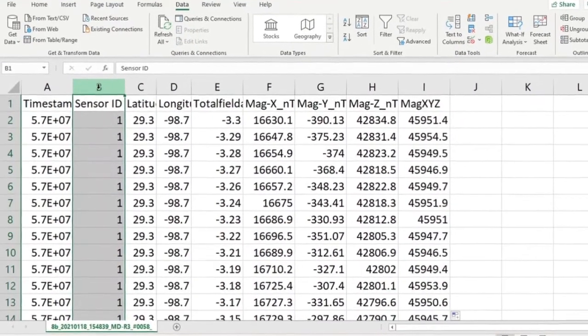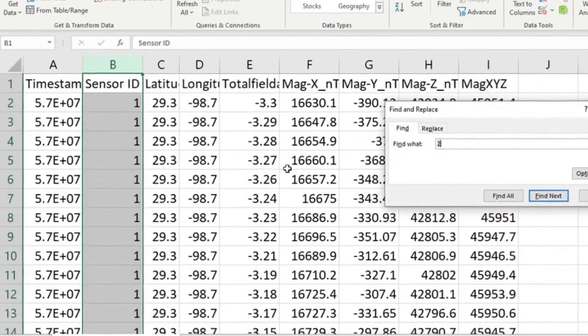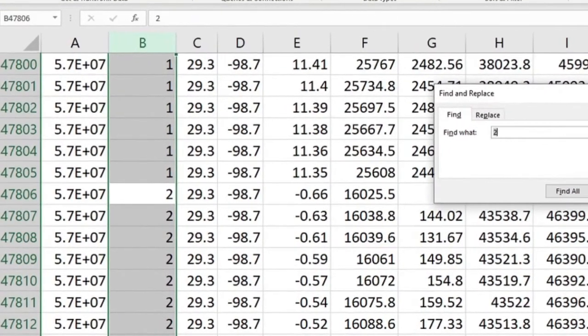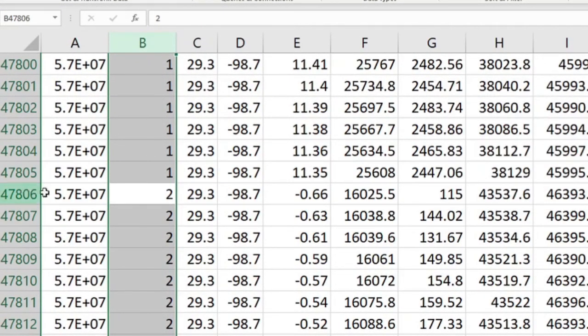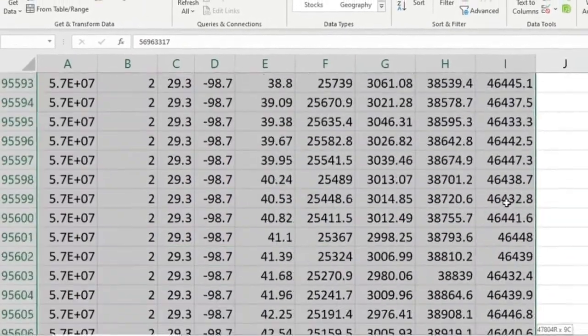The magnetometer data was imported into a worksheet to prepare it for importing into SURFER and GIS mapping software. The recorded data included the latitude and longitude to more than six decimal points along with the total magnetic field as well as the individual magnetic readings in the X, Y, and Z directions in nanoteslas.